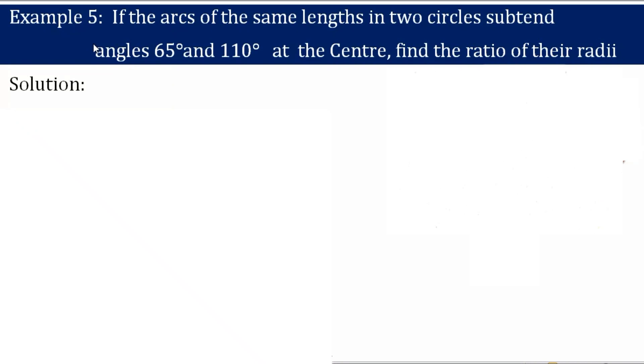Hello students, in this video we will discuss example 5 of trigonometry chapter. If the arc of the same length in two circles subtend angles 65 degrees and 110 degrees at the center, find the ratio of their radii.